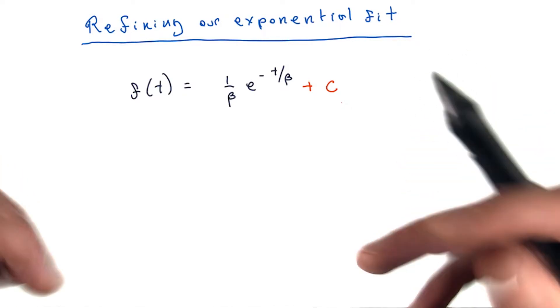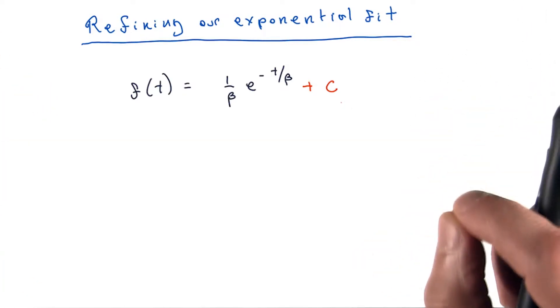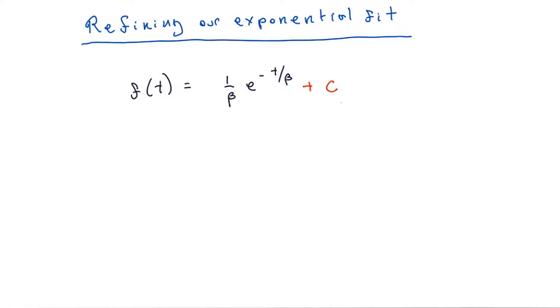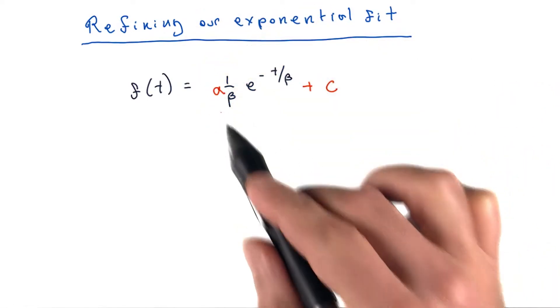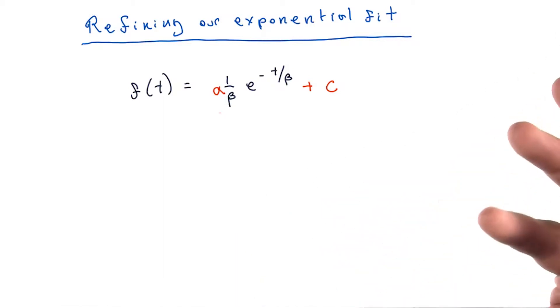We can actually generalize this to a slightly larger class of exponential models. In addition to a constant c, we can also think about another constant a, where a and c are constants.